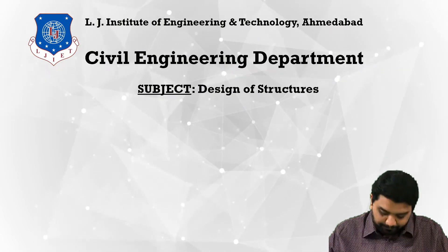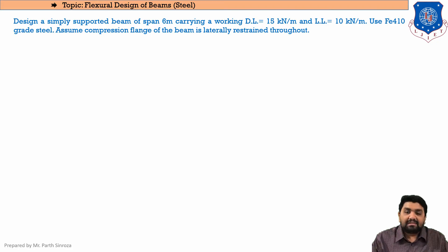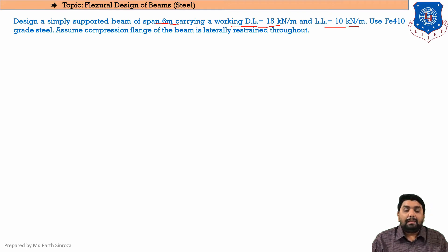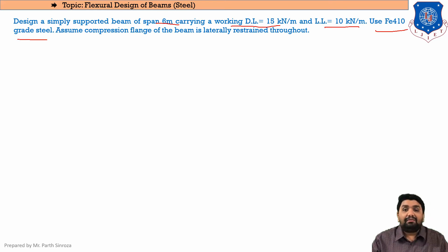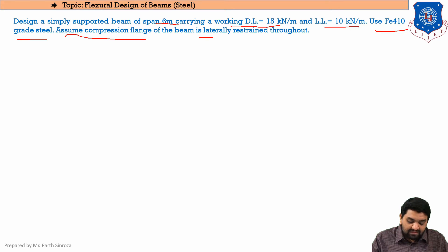The question today is: design a simply supported beam of span 6 meters, carrying a working dead load of 15 kN/m and a live load of 10 kN/m. This is the same question as the last session, except now it is to be solved using a laterally supported section rather than a laterally unrestrained one. Use Fe 410 grade steel, so Fy = 250 MPa. The compression flange is assumed to be laterally restrained throughout.